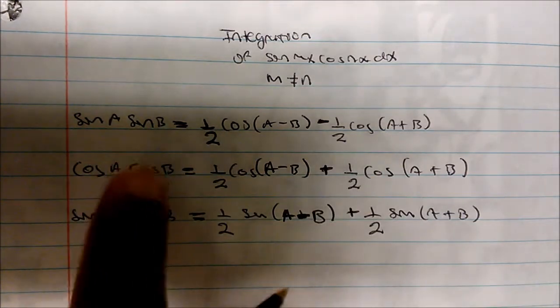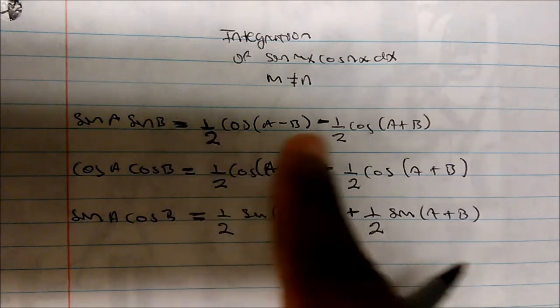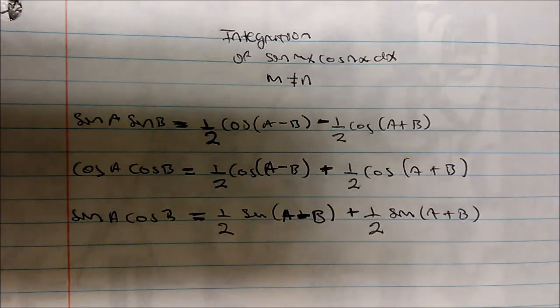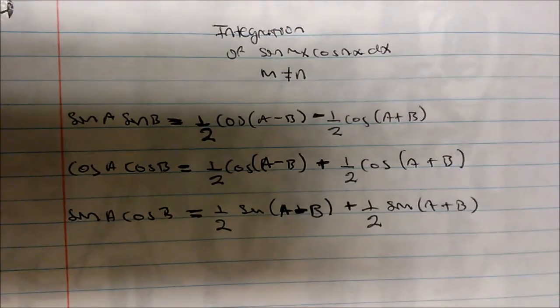And so this is a general formula that we're going to follow. If we have sine of a, sine of b, then the integration is given by one half cosine of a minus b, one half cosine of a plus b, and again, you can review these other two by yourself.